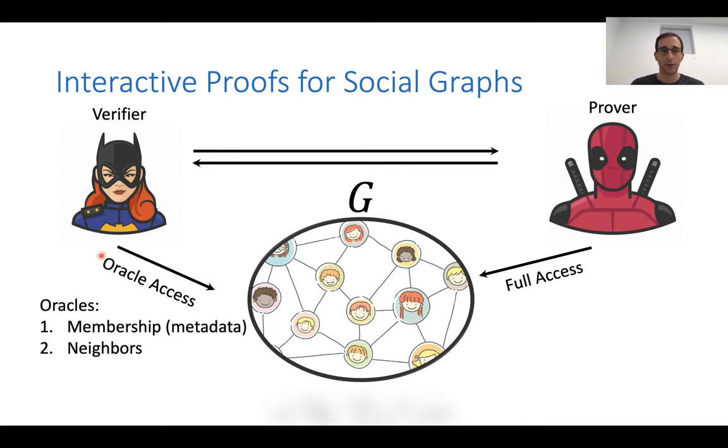So the model is like this. We have a verifier here. The verifier can interact with the prover. The instance that they are talking about is this graph G. The verifier has only Oracle access to G. And again, this Oracle is defined by the two queries we talked about. So these are membership, possibly metadata and neighborhood. The prover, of course, is all powerful, has full access to the graph and everything. So this is more like an interactive proof of proximity because the verifier cannot even read the whole instance. It's not only about not having a witness.